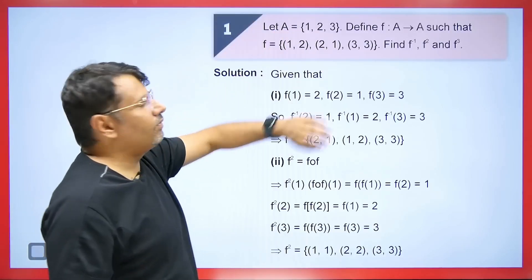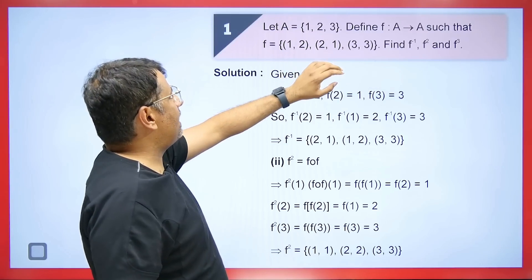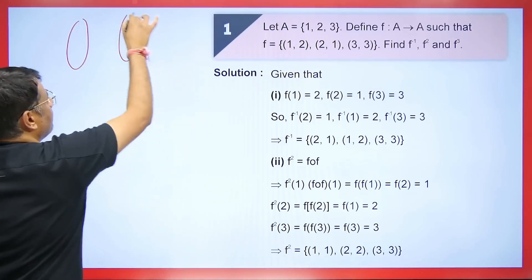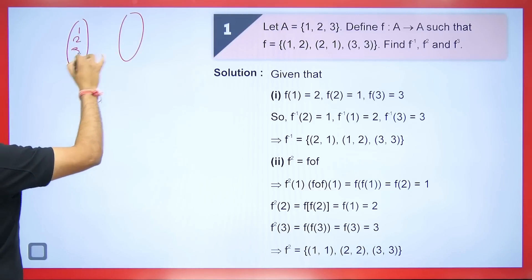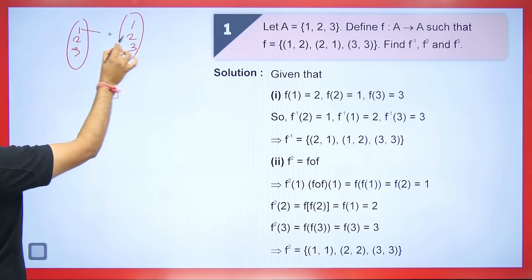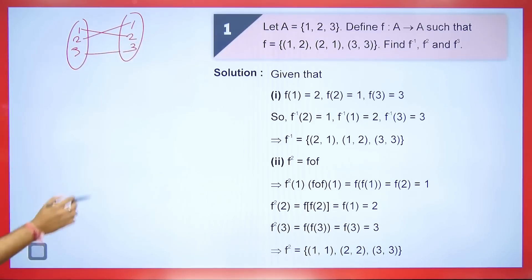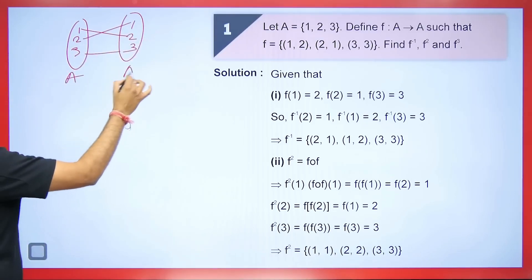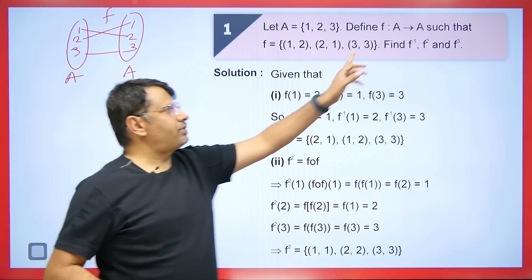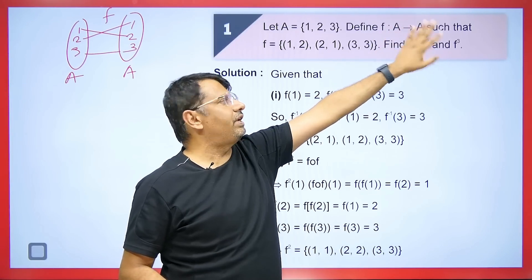Let's understand this with another example. Let A = {1, 2, 3} and the mapping F: A → A be defined as: 1 maps to 2, 2 maps to 1, and 3 maps to 3. Students were asking how to calculate F⁻¹, F², and F³. I will explain them one by one.